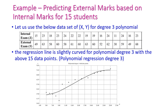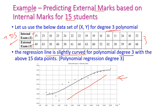Let us see one example for the polynomial regression model: predicting the external mark based on internal marks for 15 students. The training dataset contains internal marks and corresponding external marks for 15 students. We are going to use a 3rd degree polynomial. The regression line is slightly curved for polynomial degree 3 — it is not a straight line but curves to fit the data into the regression line.